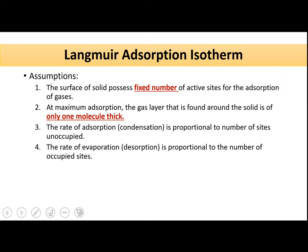The second isotherm was given by Langmuir, called the Langmuir adsorption isotherm. Langmuir made a few assumptions before deriving this isotherm. First, the surface of the solid possesses a fixed number of active sites for the adsorption of gas. Second, at maximum adsorption, the gas layer found around the solid is only one molecule thick — we are talking only about a monomolecular layer — and this isotherm does not hold true for multilayer adsorption. Third, the rate of adsorption (also called condensation) is proportional to the number of sites unoccupied.